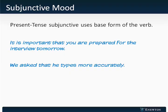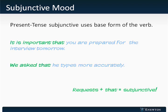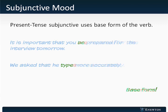Let's look at some examples. This slide has two sentences, each of which contains a very subtle error. The first one reads: It is important that you are prepared for the interview tomorrow. And the second reads: We asked that she types more accurately. While normally 'you are' would be a correct construction, because in this sentence it follows 'It is important that' — words that indicate we're going to use the subjunctive — we need to use the base form of the verb 'to be,' which is 'be.' Similarly, because 'she types more accurately' follows 'we asked that,' it expresses a request, so we should use the subjunctive form of the verb 'types,' which is 'type.'